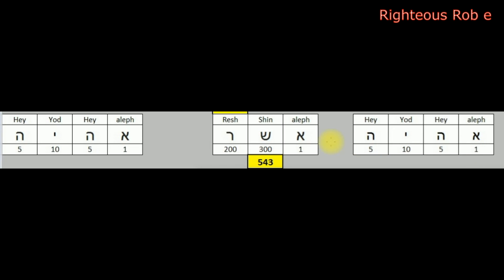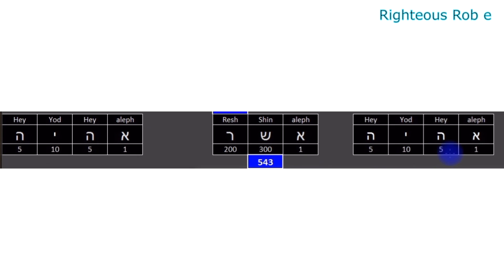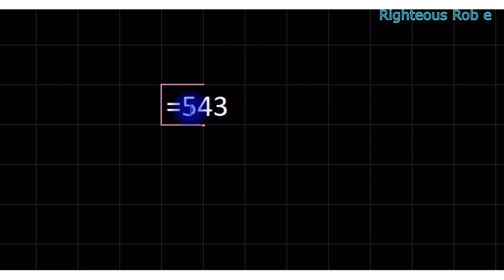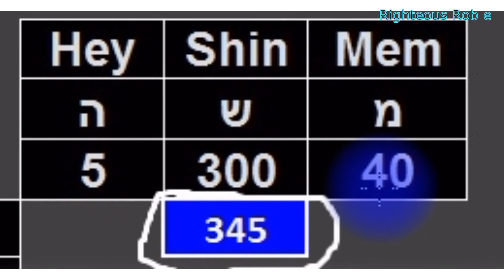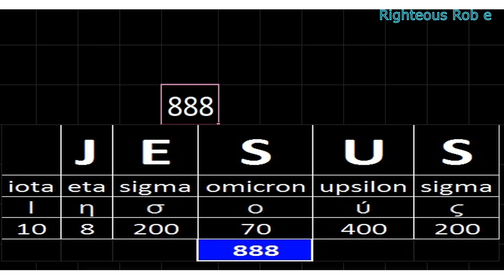'I am that I am' in Hebrew has a Hebrew gematria sum total letter value of five hundred and forty-three — the anagram numbers of three hundred and forty-five. Five hundred and forty-three equals 'I am that I am' in Hebrew, and three hundred and forty-five equals Moses in Hebrew. Jesus as Zeus in Greek, and Sophia, have a Greek sum total letter value of eight hundred and eighty-eight.